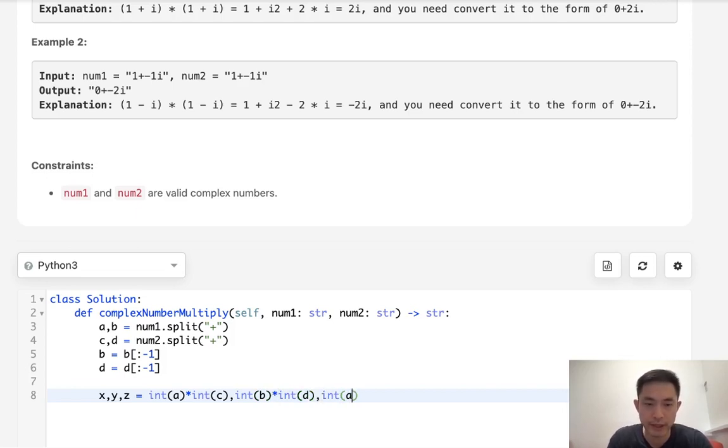Now the remainder that we get one part is the imaginary part. This one's a little bit more complicated. We have to say a times int of d plus int of b times int of c. So now we have everything that we need. We'll just get our real and imaginary part. Real is just going to be the x subtracted by the y and imaginary part will be z that we calculate.